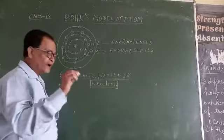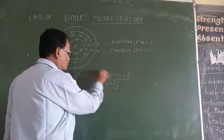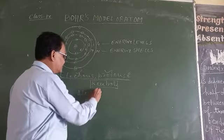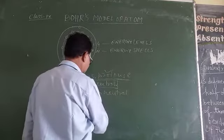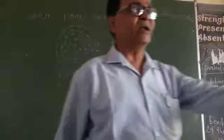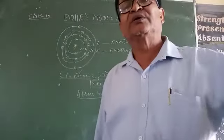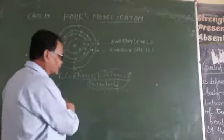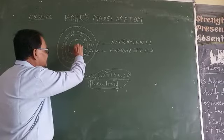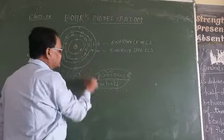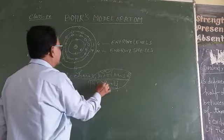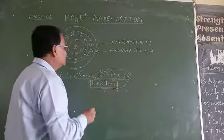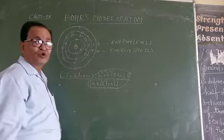Since in an atom the number of electrons is equal to the number of protons, and both are oppositely charged, therefore an atom is electrically neutral. The protons and neutrons, these two subatomic particles, are located at the center of the atom called the nucleus. Since the proton is electrically positive and the neutron is neutral, the nucleus of the atom is positively charged.